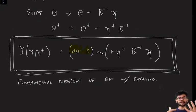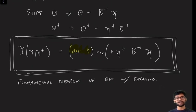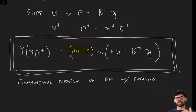That concludes our whirlwind tour of the algebra of Grassmann variables and how to do integrals with them. In the next video, we are going to understand how all this translates into the path integral and derive the Feynman rules for fermions.